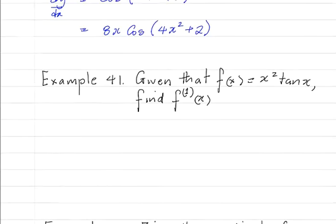We have y is equal to x squared tan x, and we're to differentiate this. So this is a product — x squared multiplied by tan x.